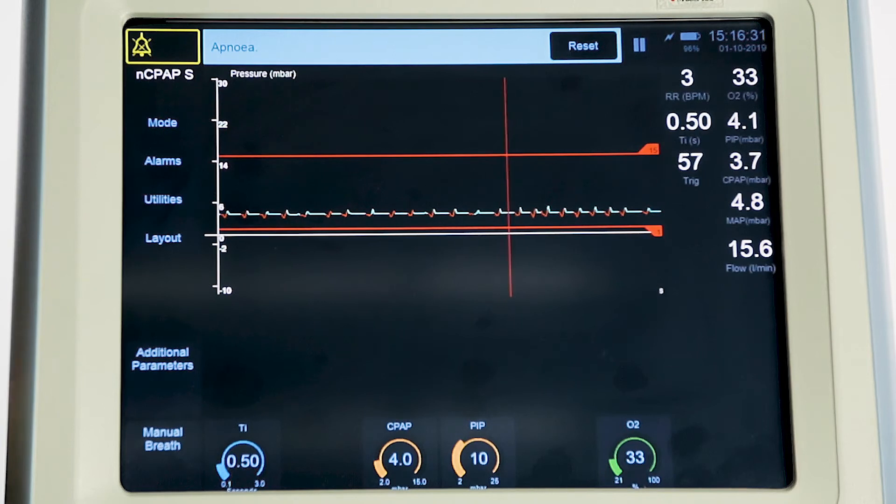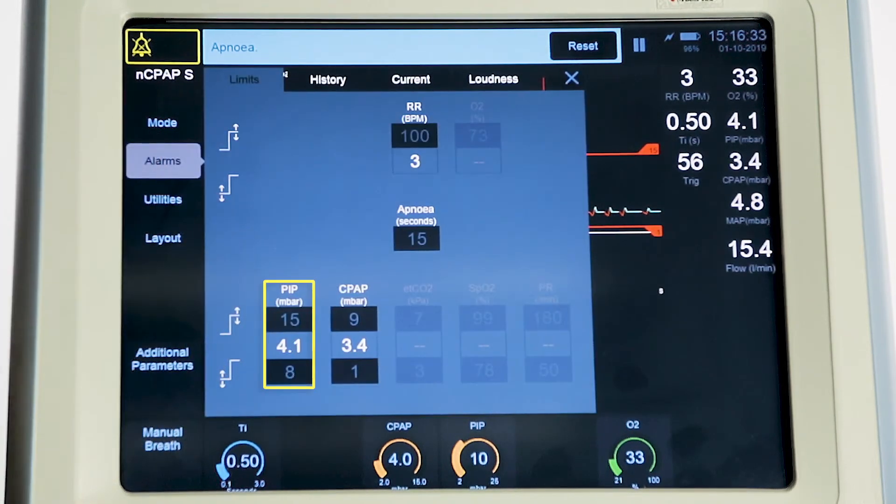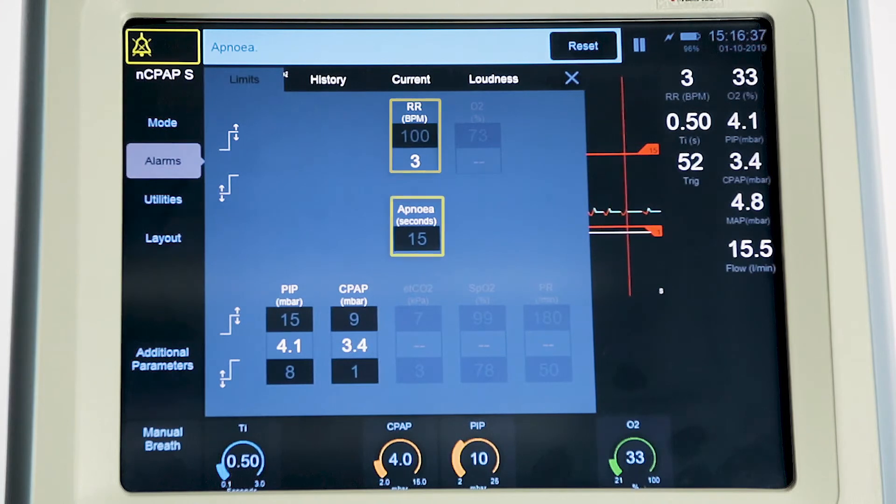Alarms include high and low PIP, high and low CPAP, high RR and apnea time. Apnea alarm can be turned off. CPAP alarms are auto-set and can be user-adjusted.